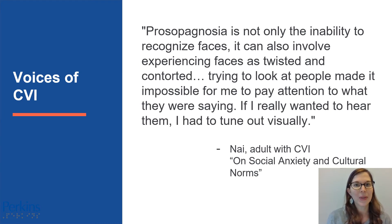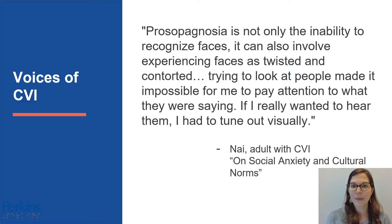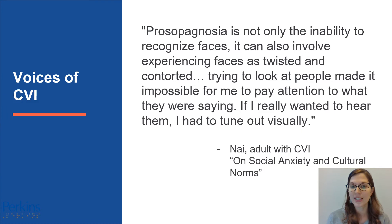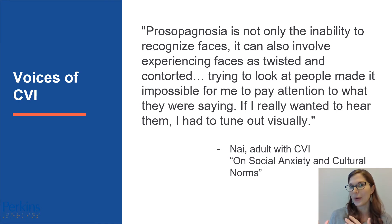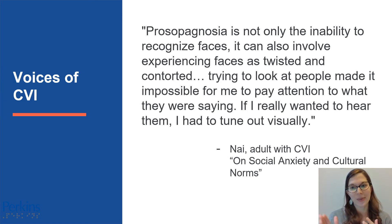Like always, we like to include a couple of quotes from individuals with CVI. Nye is an adult with CVI, and she said, 'Prosopagnosia is not only the inability to recognize faces, it can also involve experiencing faces as twisted and contorted. Trying to look at people made it impossible for me to pay attention to what they were saying. If I really wanted to hear them, I had to tune them out visually.' This is true for a lot of our students with CVI. It can be easier for them to attend to faces when someone isn't talking at the same time. So sometimes a student might make eye contact with you, and then once you start talking, you might notice that they're turning away. This way they don't have to multitask listening and looking at you at the same time. It might be easier for them to utilize one sense at a time.